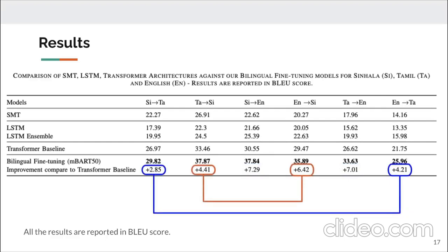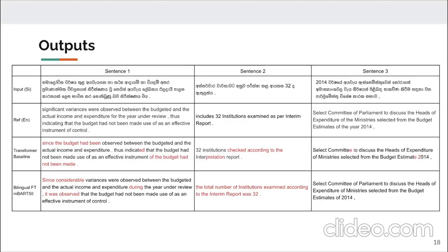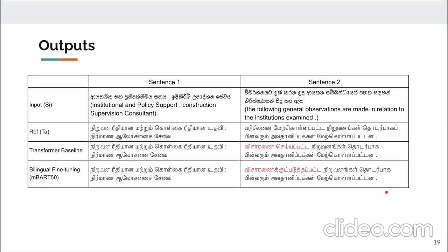Even though the pre-trained model used 595 million Tamil tokens — higher than 243 million tokens for Sinhala — Sinhala tends to perform better when on the target side compared to Tamil. We believe this is because Tamil is more inflectional and complex than Sinhala. Sample outputs show that our fine-tuned model produces more accurate, meaningful, and complete English sentences than the transformer baseline. In non-English-centric Sinhala-Tamil translation, our model also identifies proper joint characters and translates correctly.